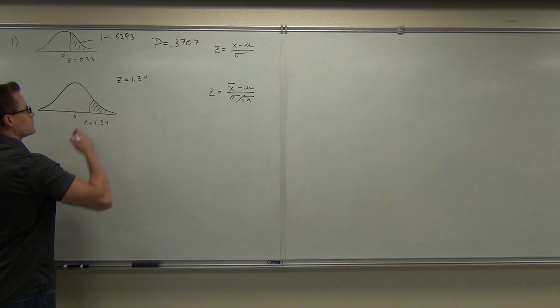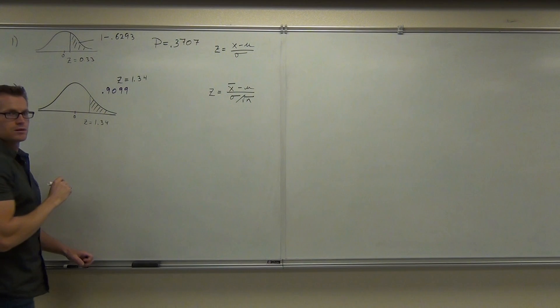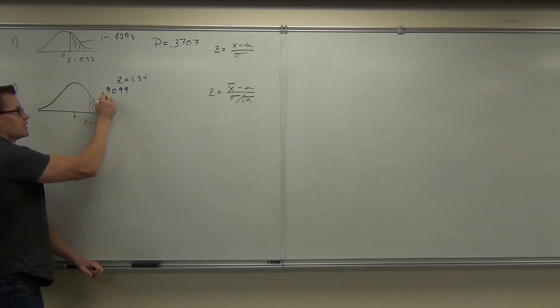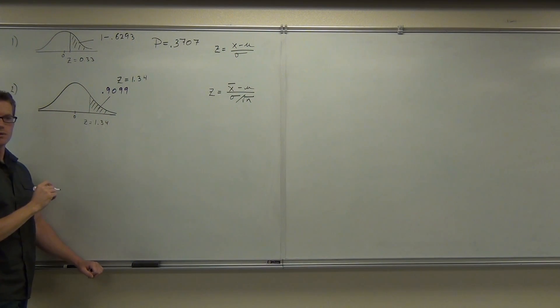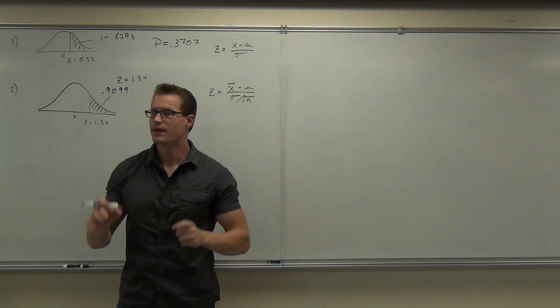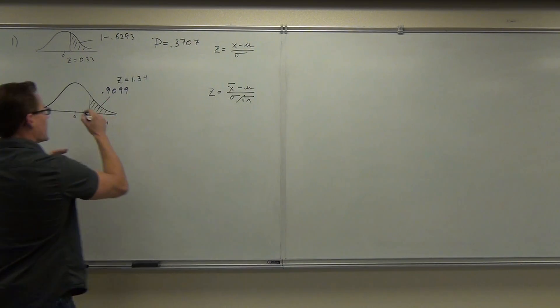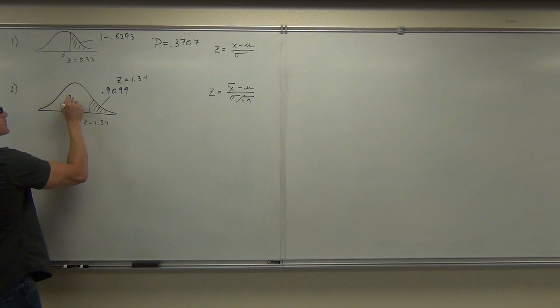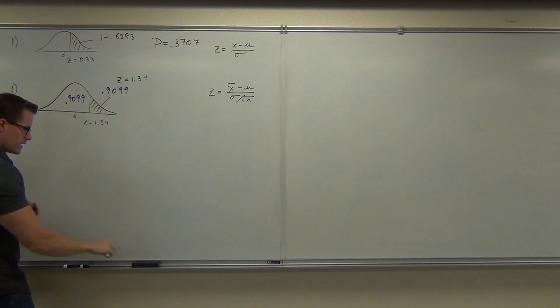Wait a minute. I pointed it here. Is that right? No. Where is 0.9099? Is that this area? No. That's not the area I'm looking for. It's this area. So you need to know that the area is always going to be to the left. That's what the table is giving you. It's actually giving you this. That's 0.9099.